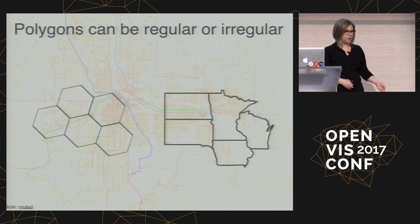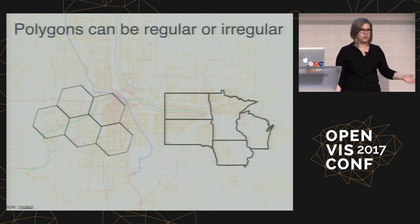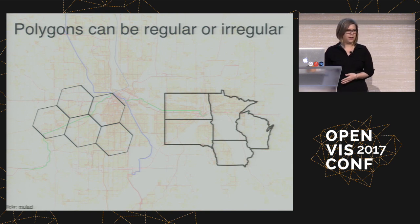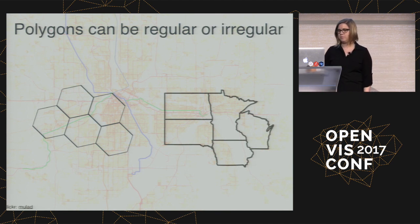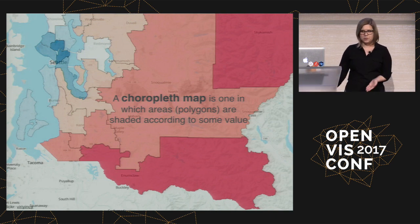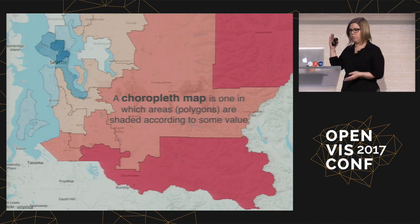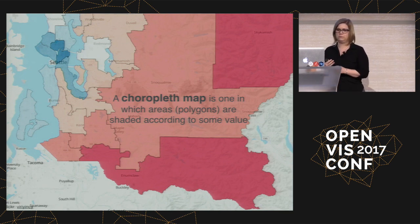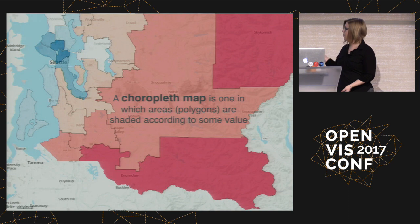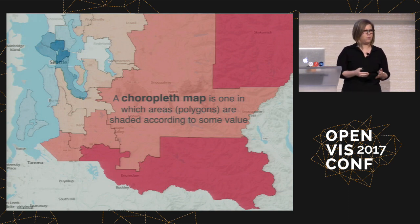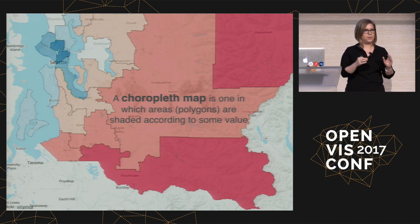When we're doing mapping of spatial polygons, we can have regular polygons or irregular polygons — like hexagons on a map, or polygons like US states. In data visualization, spatial polygons are almost always colored by some value. We make choropleth maps where areas are shaded according to the value of some variable. This example from Flickr shows Prop 1 in Seattle, a light rail measure, with areas shaded by whether people voted for or against it.